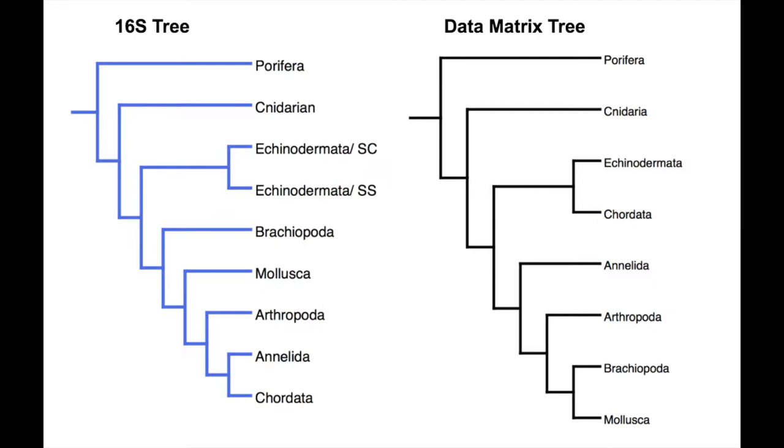The biggest difference between the two trees is that on the data matrix tree, you can see that Chordata and Echinodermata share a fairly recent common ancestor, while on the 16S tree, their most recent common ancestor appears earlier.